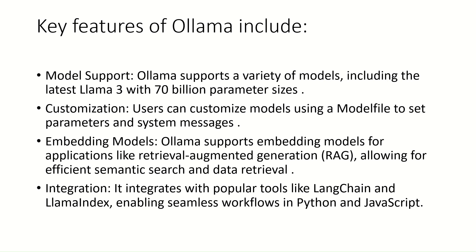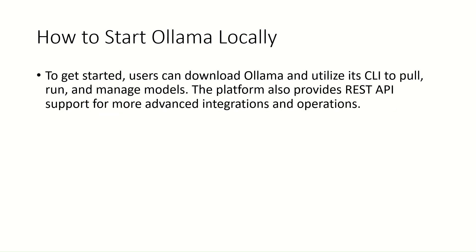The first feature is it supports a variety of models, including the latest LLaMA 3 with 70 billion parameter sizes. The second feature is customization — users can customize models using a model file to set parameters and system messages. Ollama also supports embedding models for applications like retrieval augmented generation (RAG), allowing efficient semantic search and data retrieval. It also integrates with popular tools like LangChain and LlamaIndex, enabling seamless workflows in Python and JavaScript.